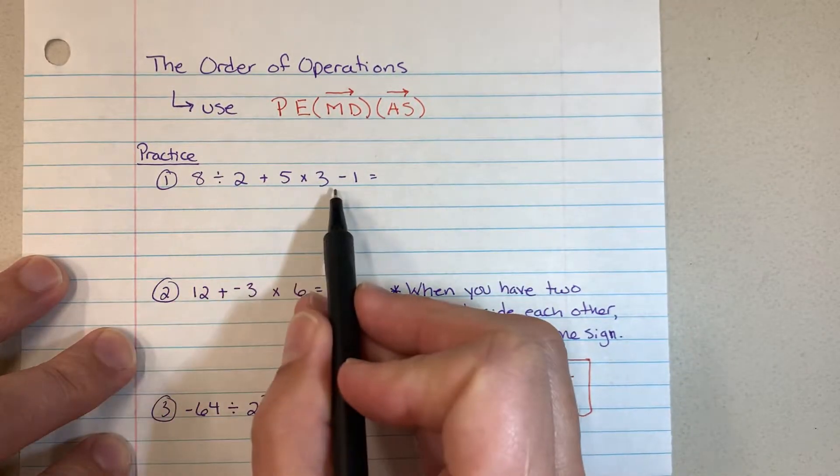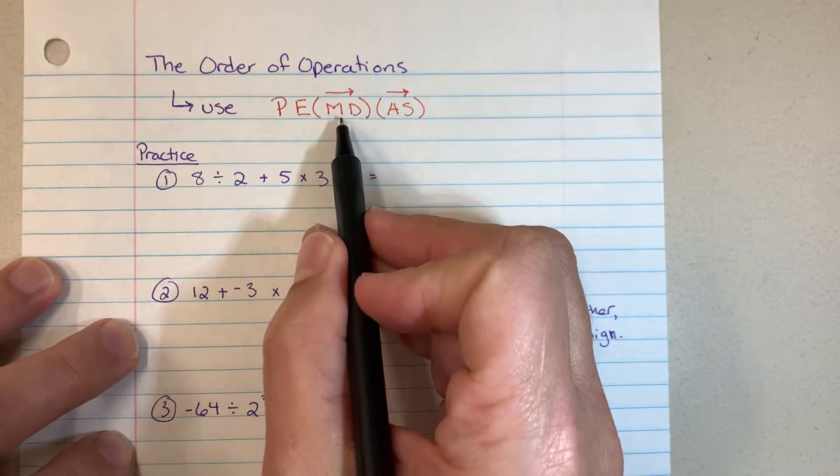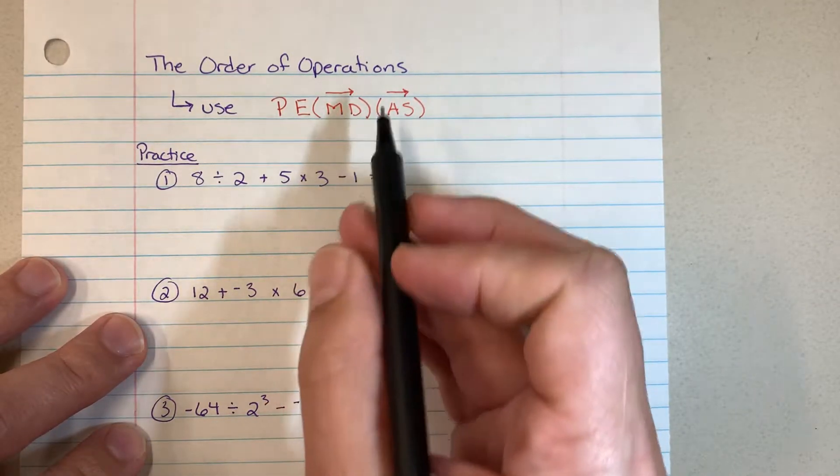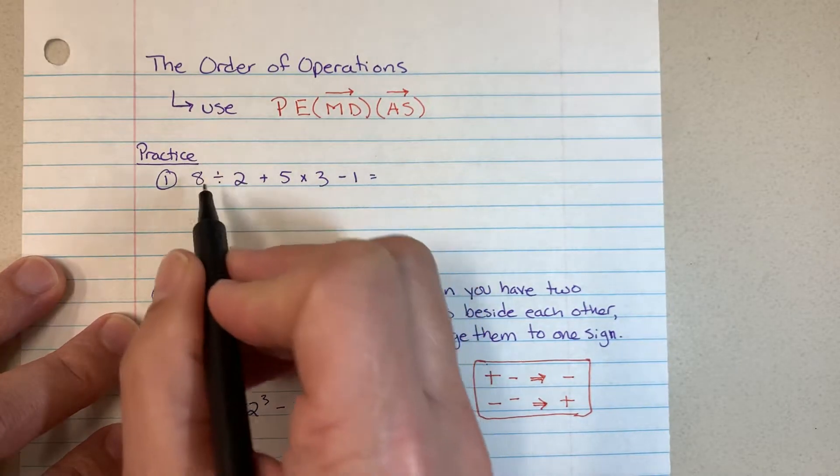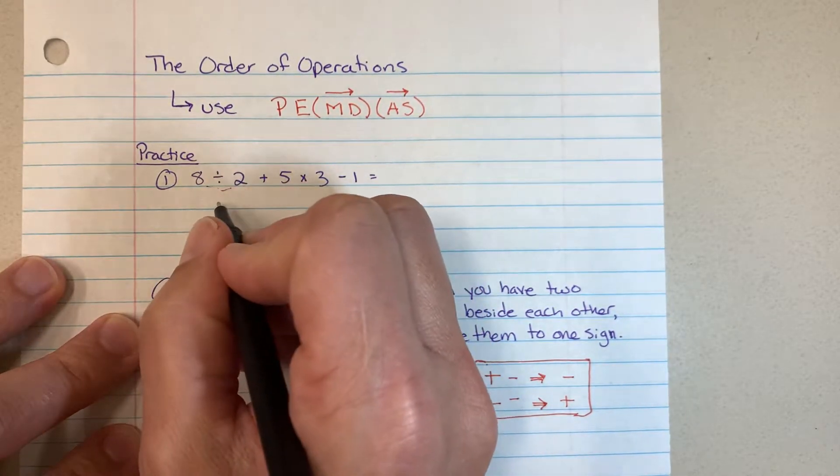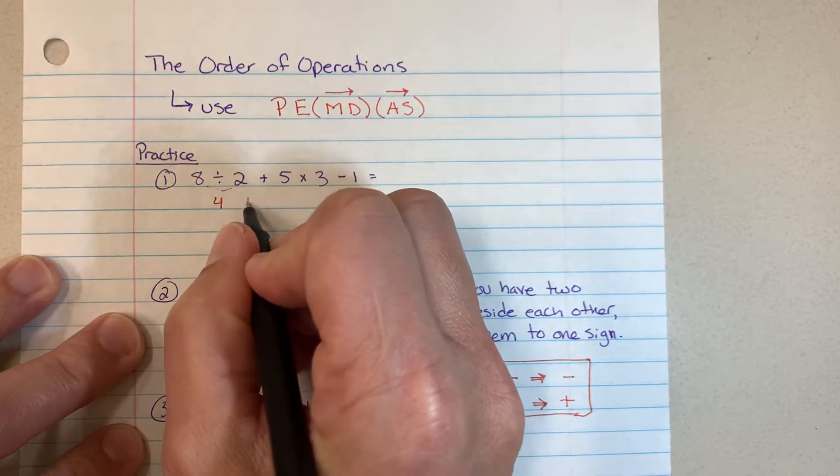E for exponent, don't have any exponents. So now we're on this step, multiplication and division. Let's work from left to right. The first I see is division, so 8 divided by 2 is going to be 4. Drop everything else down.